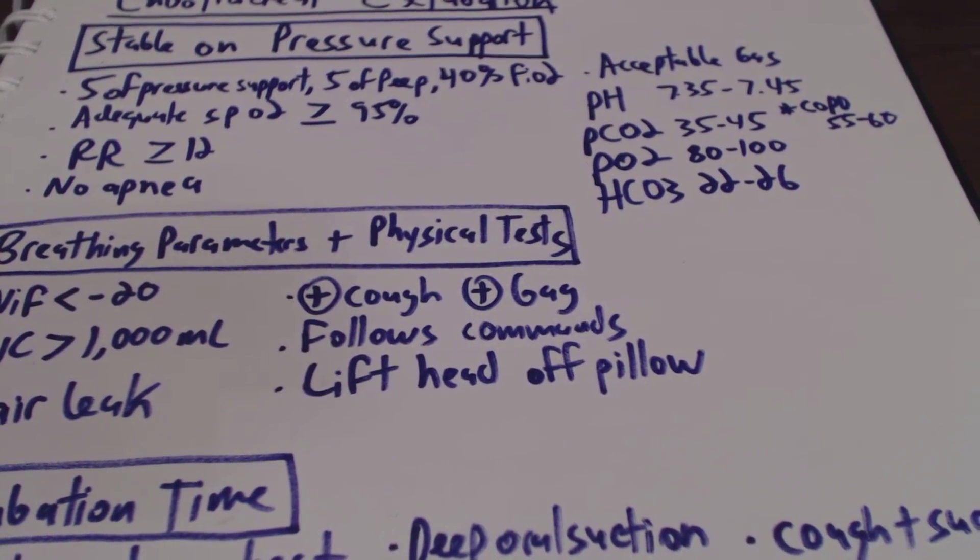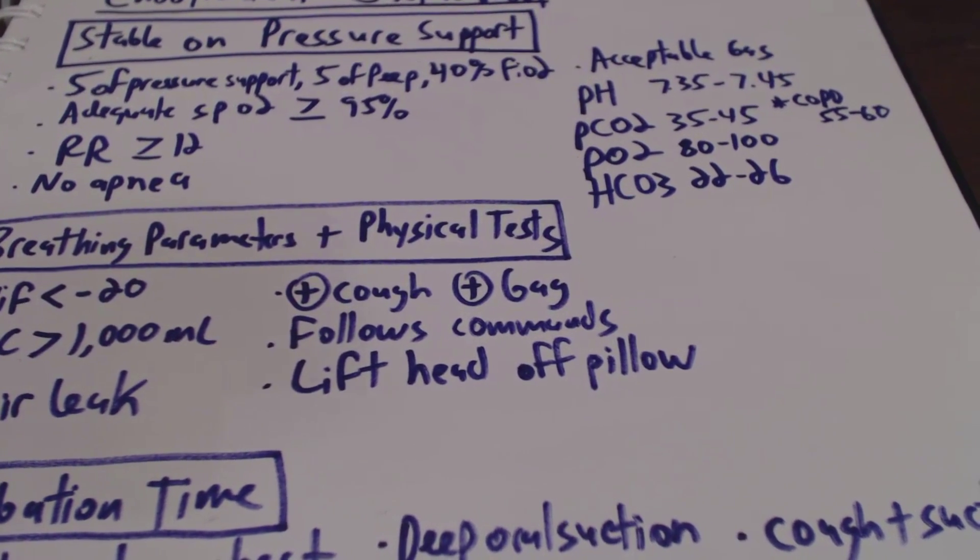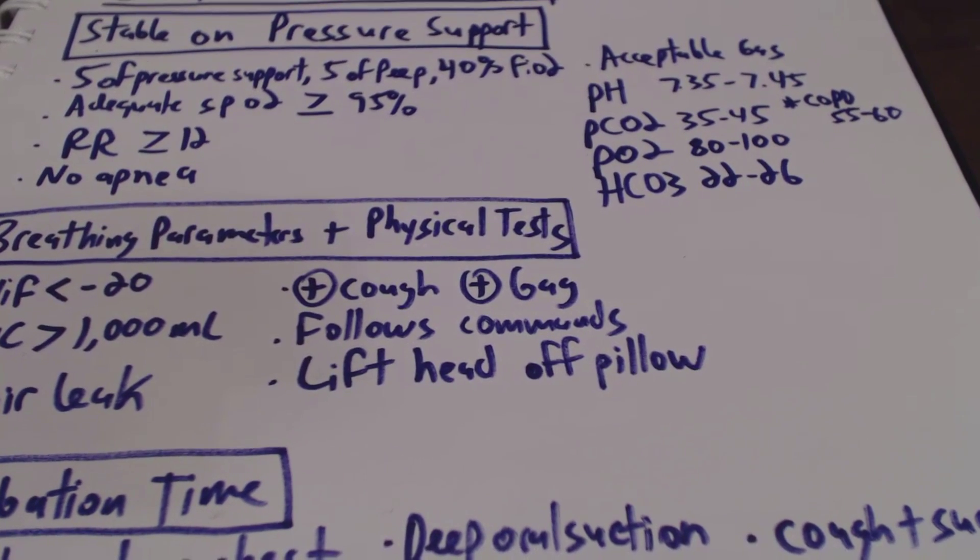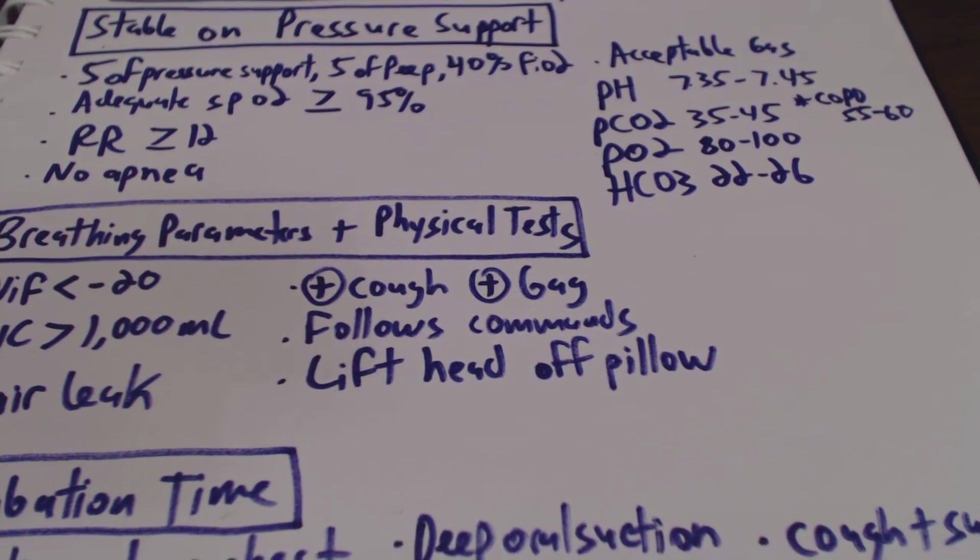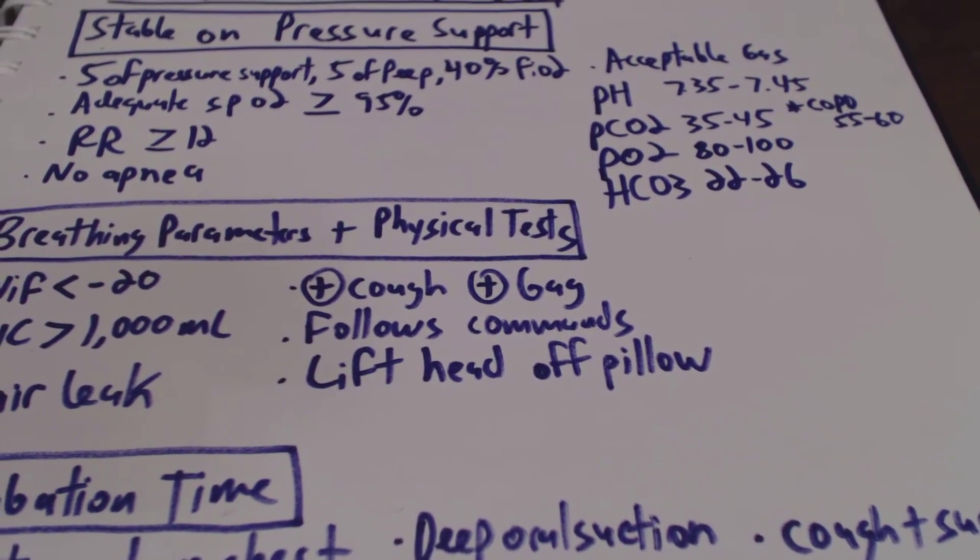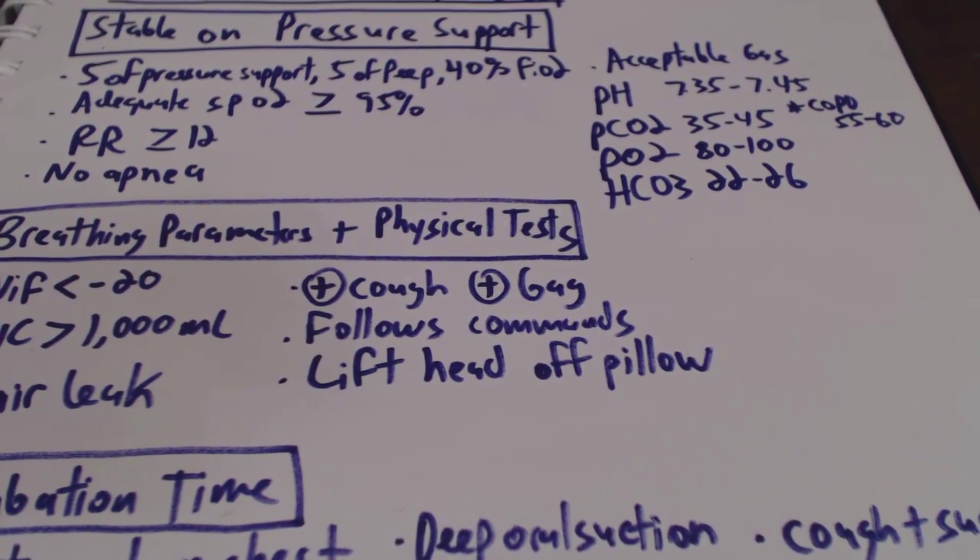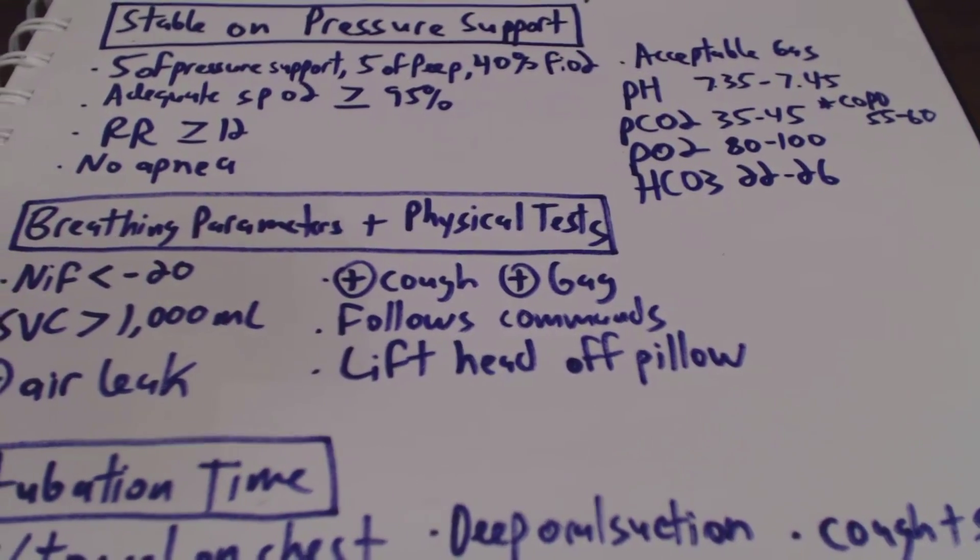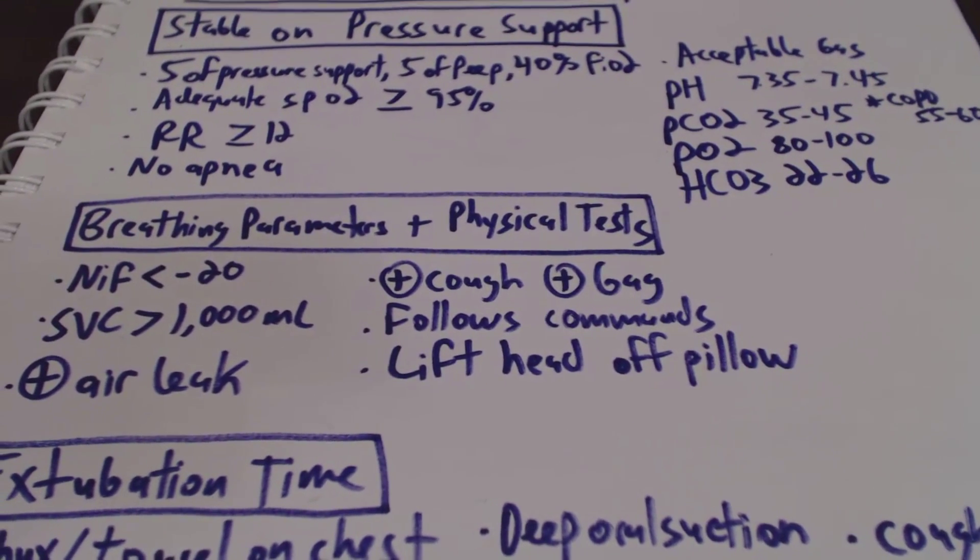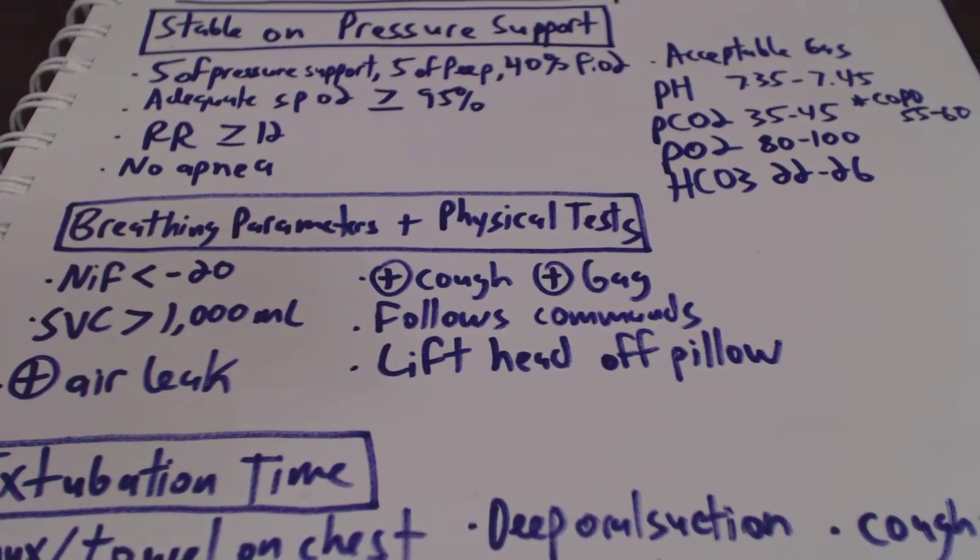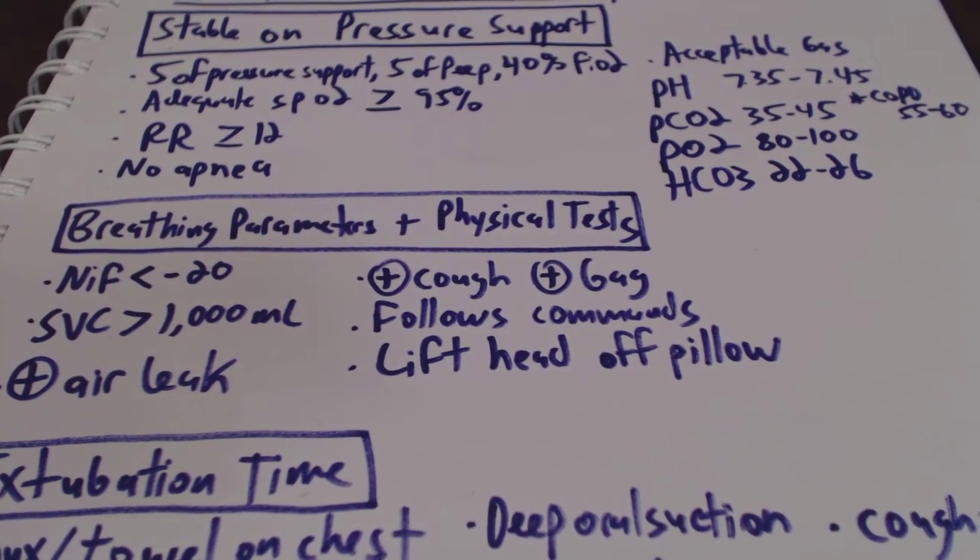We also want to make sure the patient is following commands and they can also lift their head off the pillow. Now this is not always the case, especially if they had a CVA. So if the patient has a known stroke and they're not really following commands, or they have some focal deficits, as long as some of the other parameters are adequate and okay, we will extubate them even though they're not following commands or if they can't lift their head off the pillow.